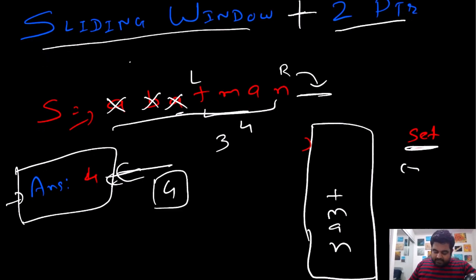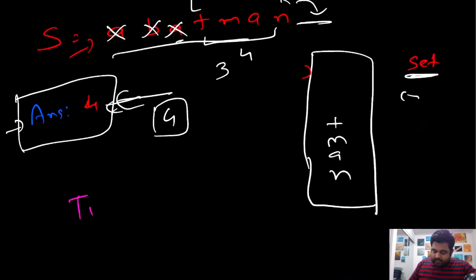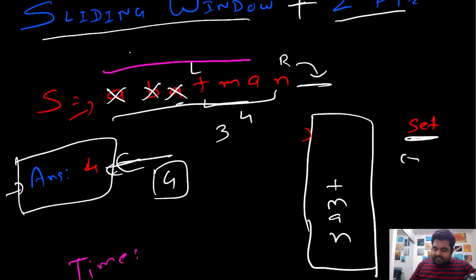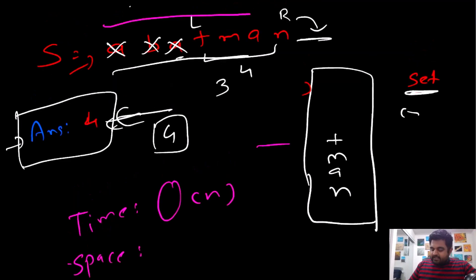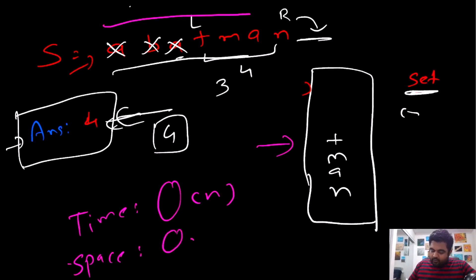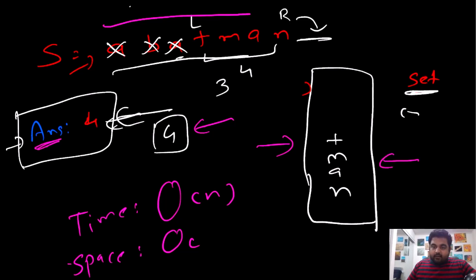Looking at time and space complexity: we complete everything in a single iteration, so time complexity is O(n). For space complexity, we use an additional hash set. At any moment, it only holds the unique characters in the current window, and once we encounter a repeating character we remove elements. So space complexity is O(k), where k is the length of the longest unique substring found.